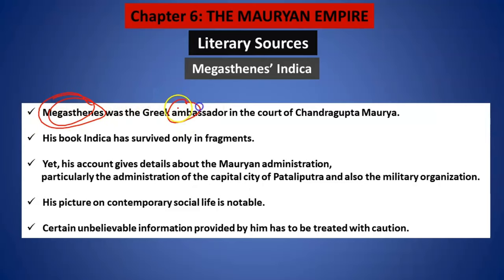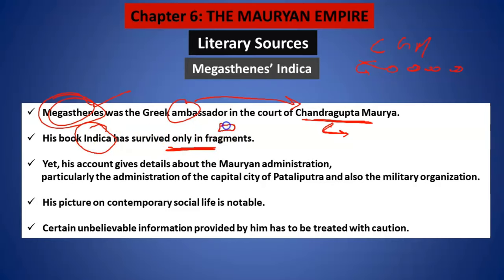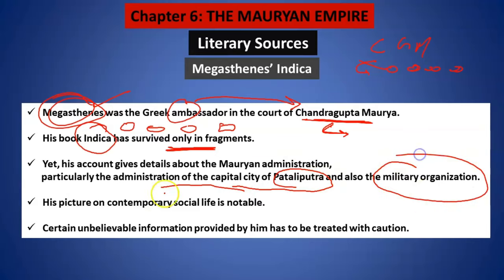Megasthenes was a Greek ambassador in the court of Chandragupta Maurya. He was a foreigner, a Greek ambassador, working under the king Chandragupta Maurya. He wrote a book called Indica, which has only survived in fragments — this book has not survived completely. It gives a very detailed account about the administration of the capital city of Pataliputra and the military organization. The social life has also been explained in this book.